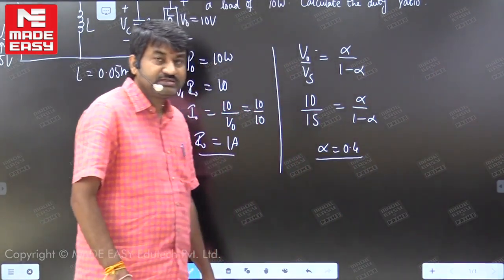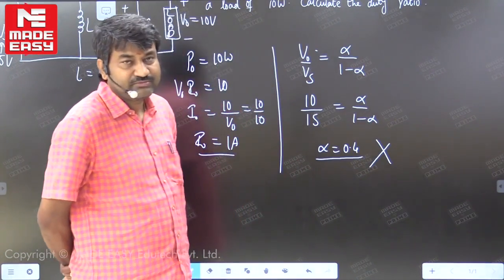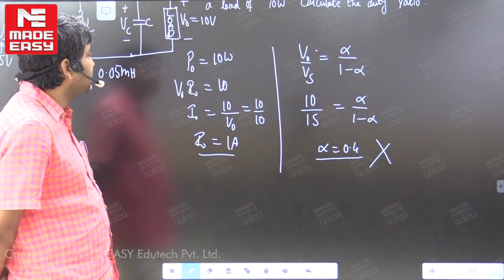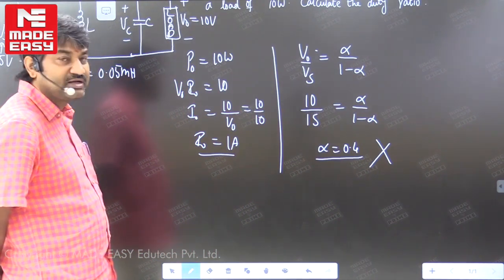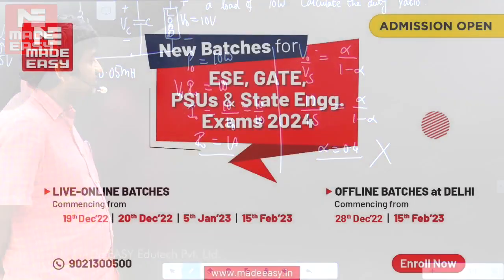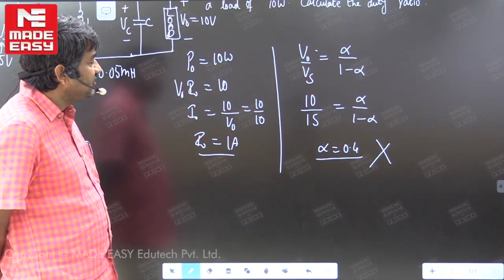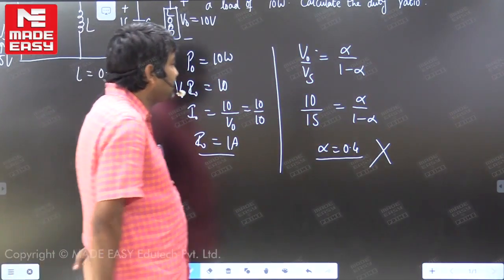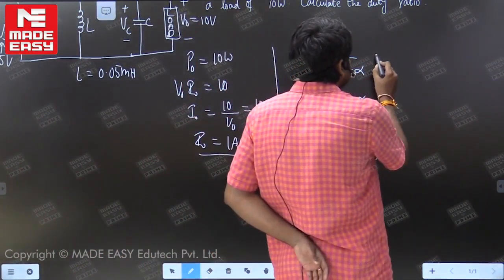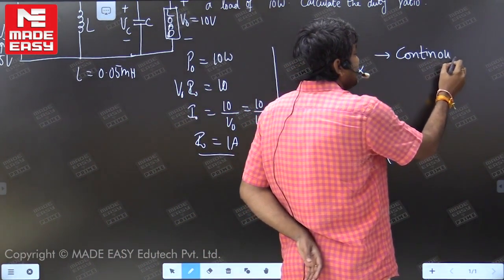But normally this is the mistake we will make here — this is wrong. Every student, the moment they see the circuit diagram, uses this formula and calculates alpha equal to 0.4. Why is it wrong? This formula is applicable only for continuous conduction mode.